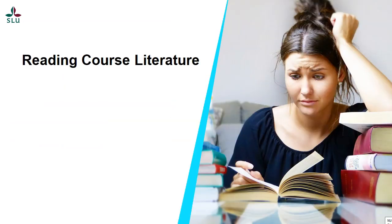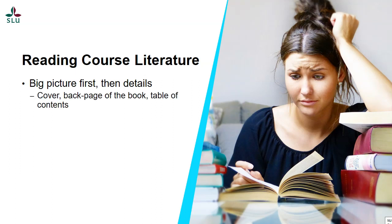When it comes to reading course literature, there are also some tips. Try to see the big picture first and then the details. It is easy to focus on details, especially if you're not used to reading course literature, but try to stop and think about where the detail belongs in a larger perspective. If you're reading a book, the back page often tells you what subjects are dealt with, what questions are answered, and what perspectives and theories are covered. So start by reading the back page and also look at the cover. Scan through the table of contents to get an idea of what the chapters are about. You can also try to make the headings into questions to learn more. Then summarize — what is the point? Do not read too long; stop after about 10 to 20 minutes and try to concretize and summarize what you've read.